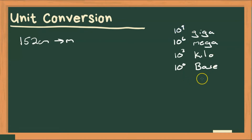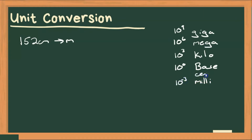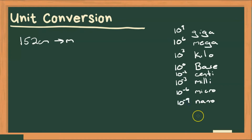We can go the other way too and get smaller. We can have milli, which is 10 to the minus three. We can squeeze in centi, because we use centi quite a lot, which is 10 to the minus two. A micro, which is 10 to the minus six. And one more — nano, which is 10 to the minus nine.